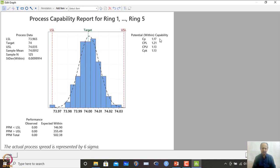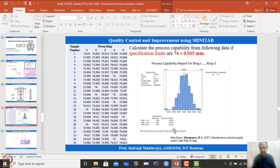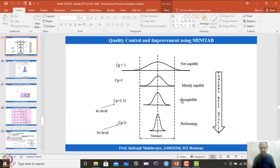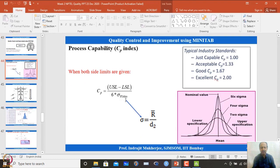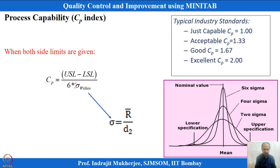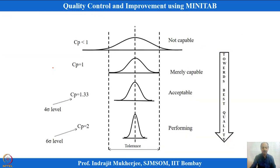This gives a basis for deciding whether to take an improvement initiative for a CTQ. If CP is less than 1.33, improvement is needed. The CP formulation indicates that since tolerance cannot be changed, the only option is to reduce sigma. Reducing variability is inversely proportional to CP, so as variation decreases, CP goes up.